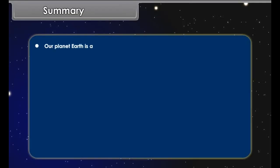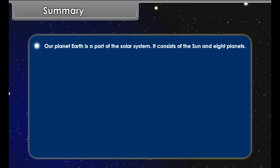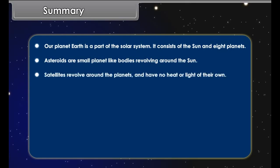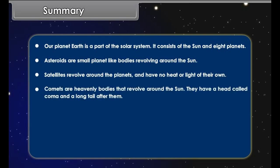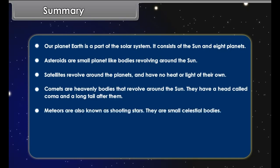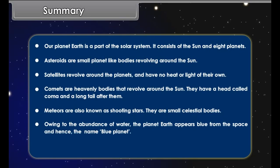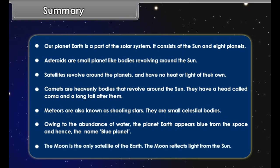Summary: Our planet Earth is a part of the solar system, which consists of the Sun and eight planets. Asteroids are small planet-like bodies revolving around the Sun. Satellites revolve around the planets and have no heat or light of their own. Comets are heavenly bodies that revolve around the Sun — they have a head called a coma and a long tail. Meteors are also known as shooting stars and are small celestial bodies. Owing to the abundance of water, the planet Earth appears blue from space — hence the name Blue Planet. The Moon is the only satellite of the Earth and reflects light from the Sun.